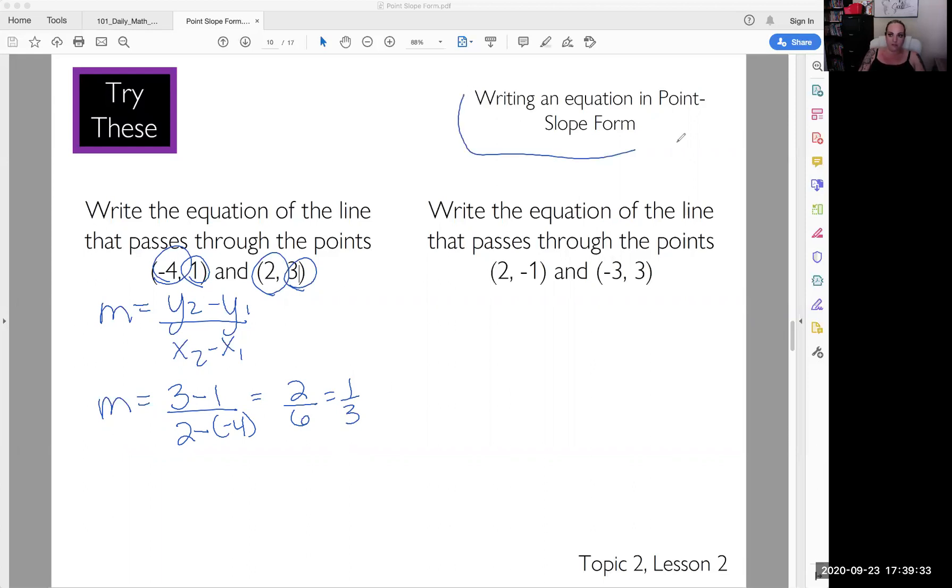So now we can write this in point slope form. We have the slope. We have a point. And it doesn't matter which one you pick. Just pick one. So I'm going to do y minus, I'll just pick this first one to keep my process the same. y1 was 1. You're going to get y minus 1 equals slope times x minus x1, negative 4. Simplify that right side and it's plus 4. And there is your equation in point slope form.